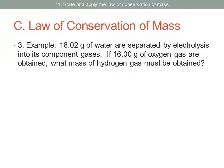Here's an example of applying the Law of Conservation of Mass. We're told that 18.02 grams of water are separated by electrolysis into its component gases. Now recall that water is made of hydrogen and oxygen. If 16 grams of oxygen gas are obtained, what mass of hydrogen gas must be obtained? So here is a basic equation for the reaction.